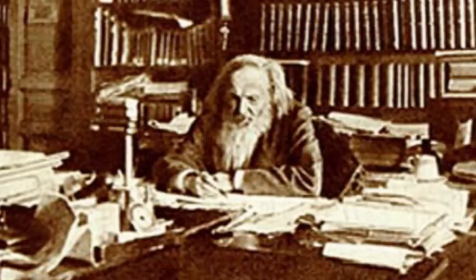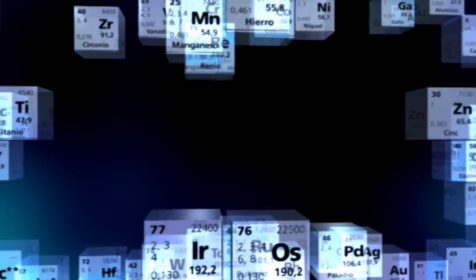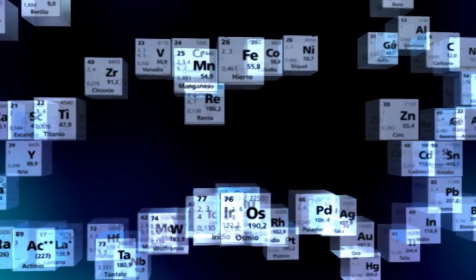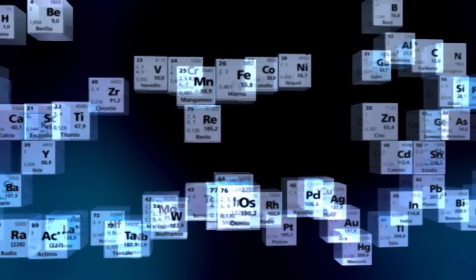Mendeleev carried his ideas out. He classified the 63 chemical elements known at that time according to their various properties. And this was the result: the periodic table.